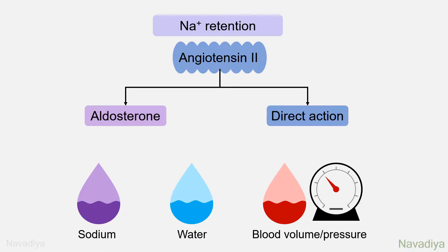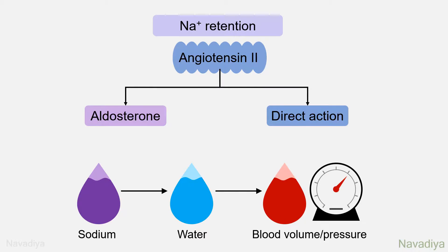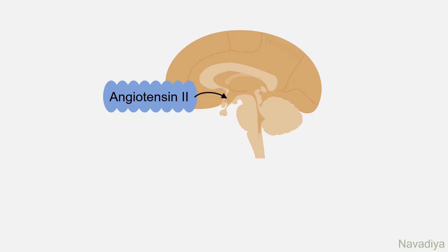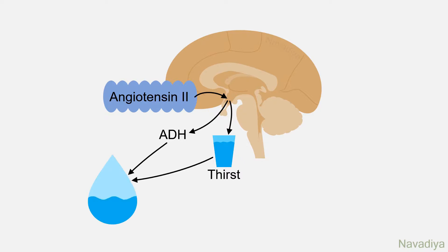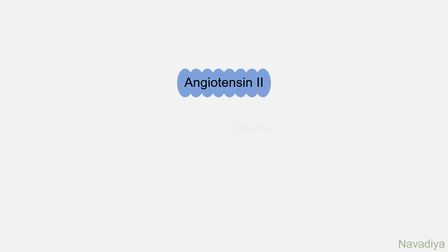As you may already know, in the body water follows sodium. So sodium retention in turn causes water retention, which brings blood volume and pressure back to normal. Among other effects are its effects on the hypothalamus, where it stimulates ADH release and thirst. Both of these contribute in increasing body water. These were the effects of angiotensin II.